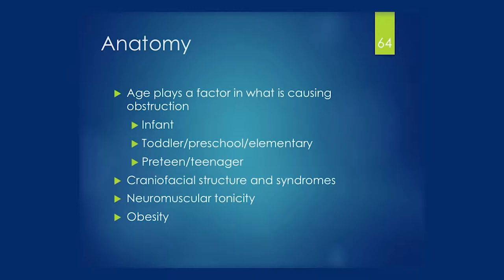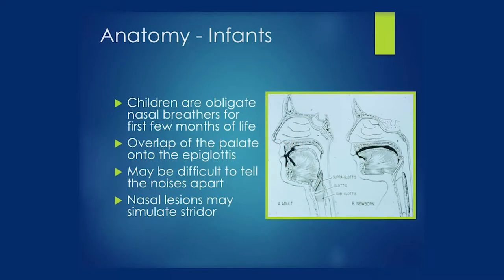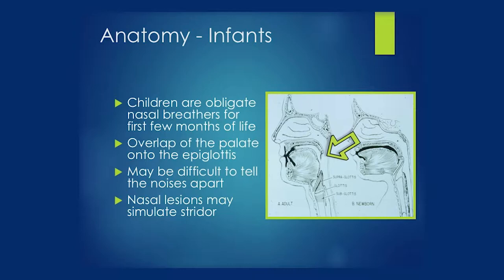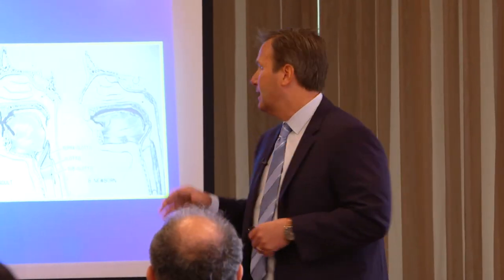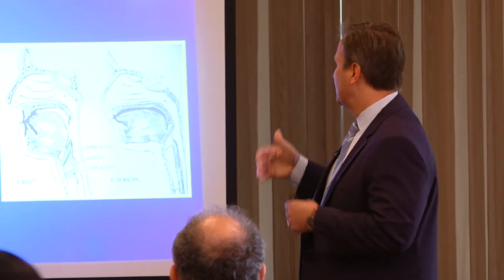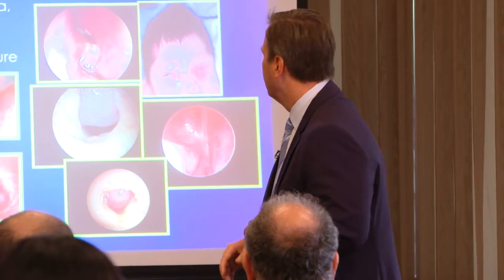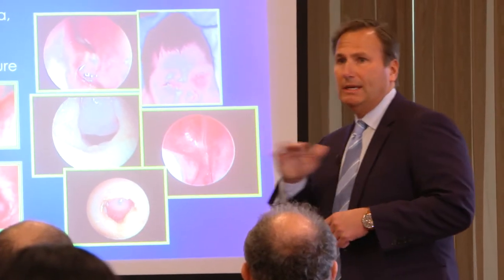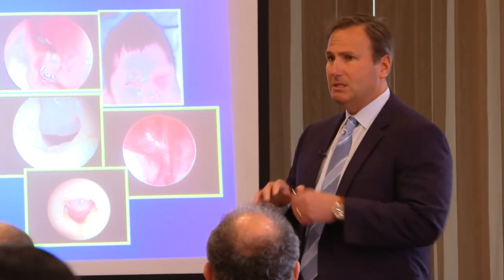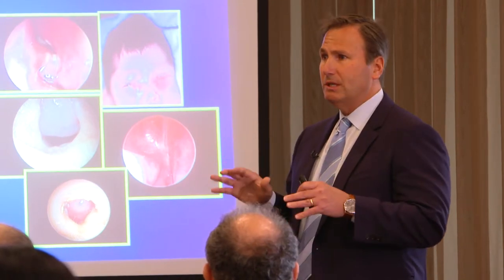Anatomy changes over time. For infants, they are obligate nasal breathers because the palate overlaps the epiglottis, versus an adult where there's an open airway. Sounds are going to sound different in an infant, and even a stridor-type sound can sound like nasal congestion just because of the airway anatomy. You have to know the anatomy to determine what abnormalities are present.